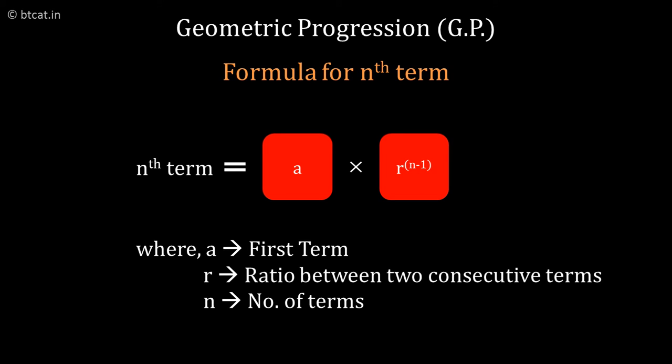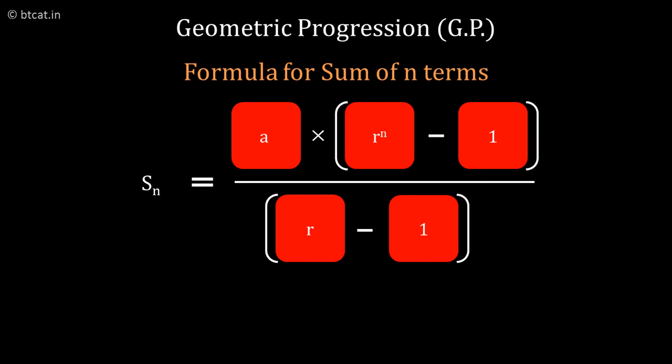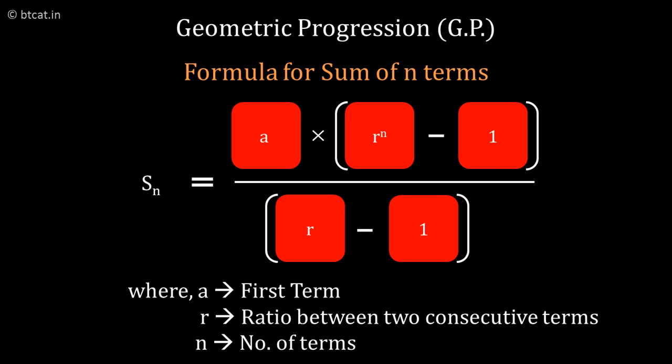The sum to N terms will be given by A bracket R raised to N. The power is N and then minus 1 divided by R minus 1. So this becomes the formula for the sum of N terms of GP.